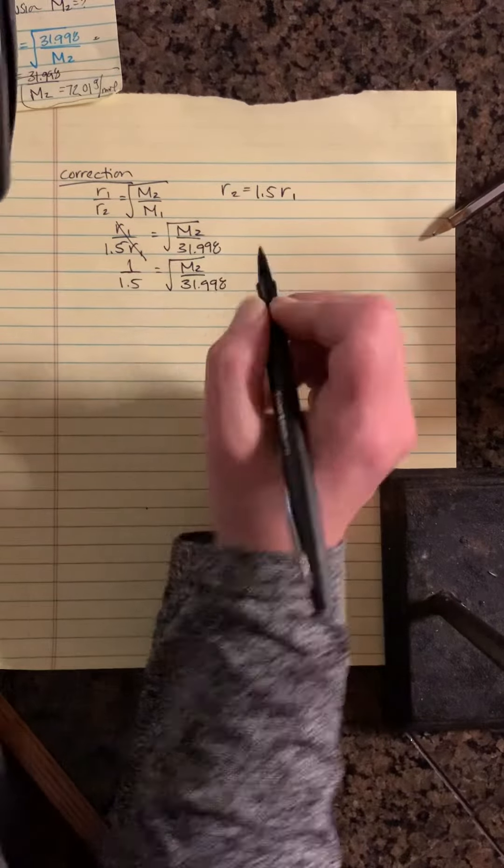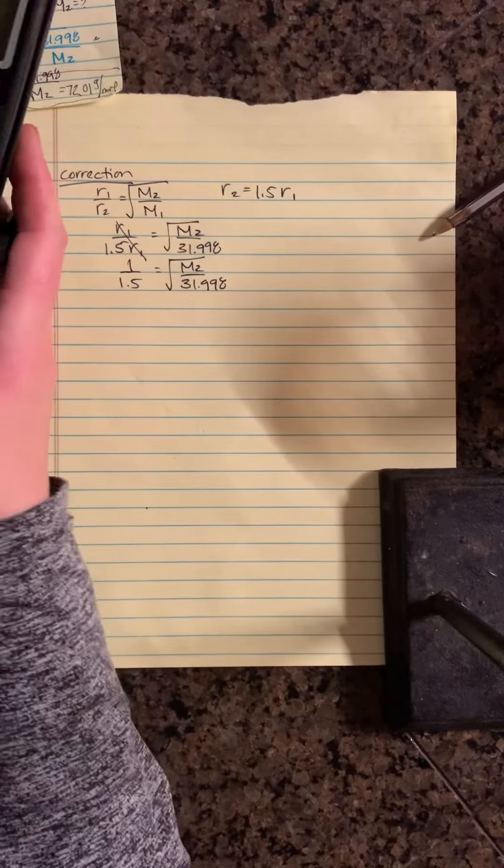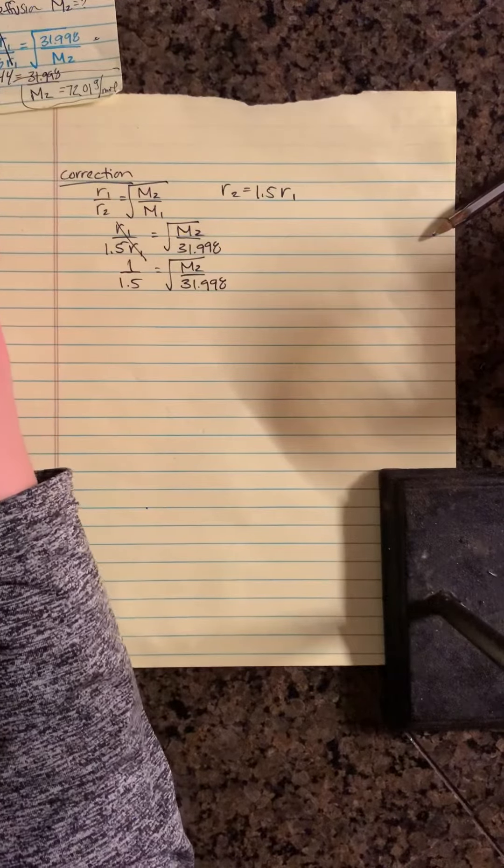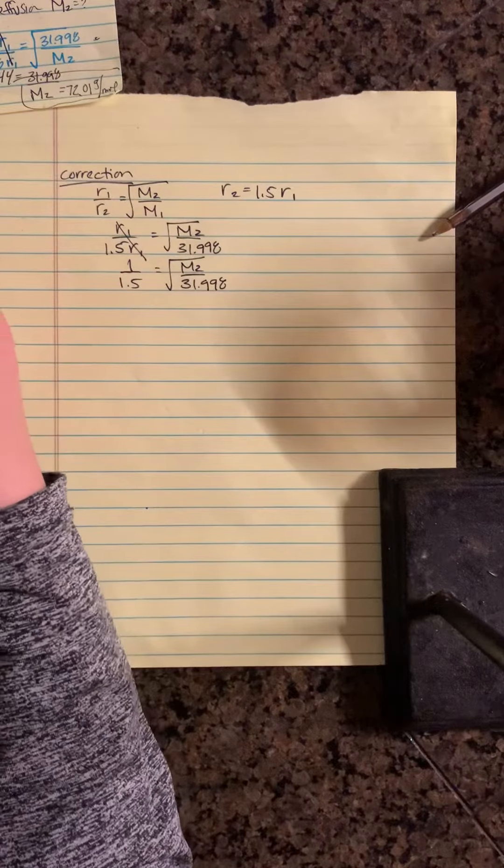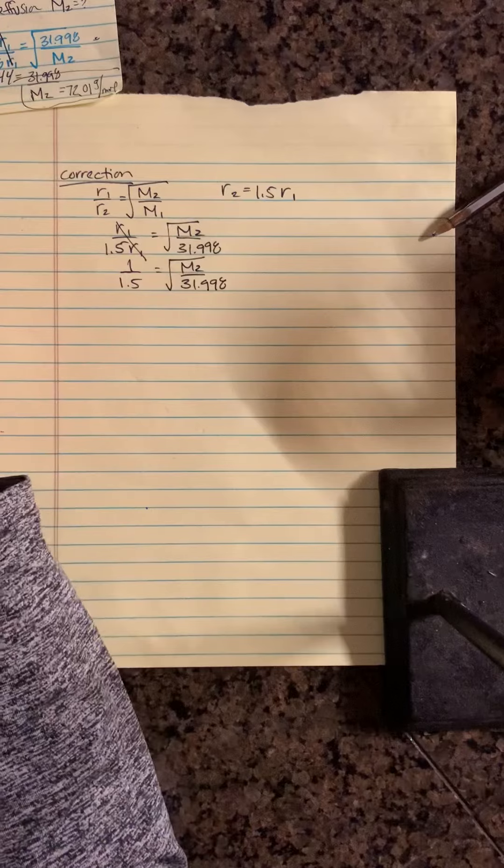over 31.998. So we're going to go 1.5X to the negative 1, E to X squared, enter, times 31.998.